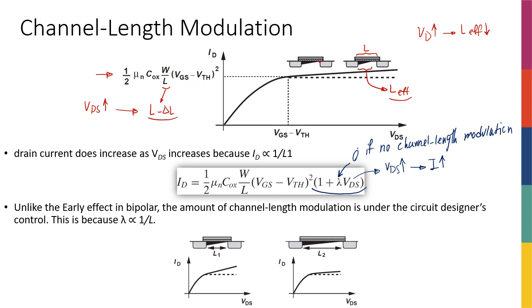However, if I have any finite value for lambda, then VDS is going to affect my current. And as you can see, instead of having a perfect horizontal line — a current independent of VDS — the current will be dependent on VDS, but the dependence is very small. It is with a very small slope, so the effect is not that big of a deal.